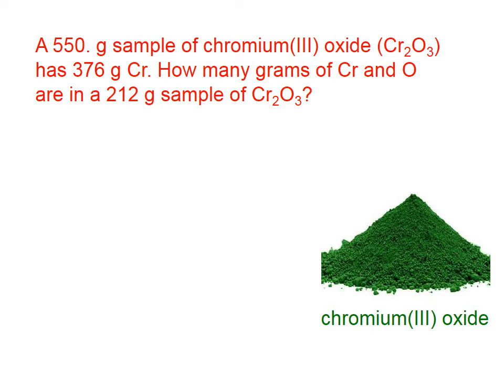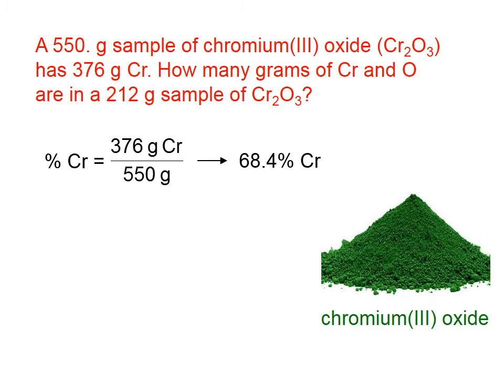Let's try a problem. A 550 gram sample of chromium 3 oxide, which has the formula Cr2O3, has 376 grams of chromium. How many grams of chromium and oxygen are in a 212 gram sample of chromium 3 oxide? We can find the percent chromium in the first sample: 376 divided by 550, which is about 68.4% chromium.